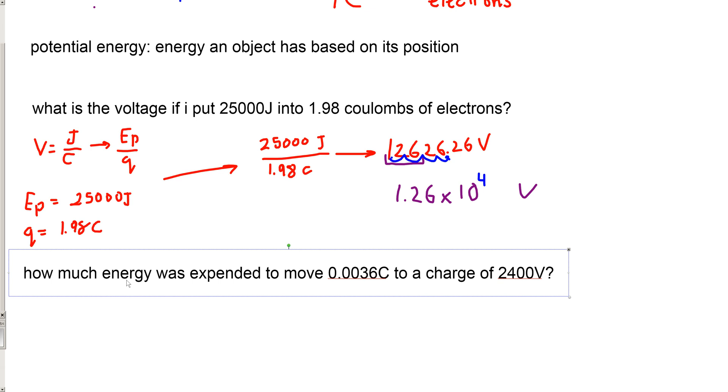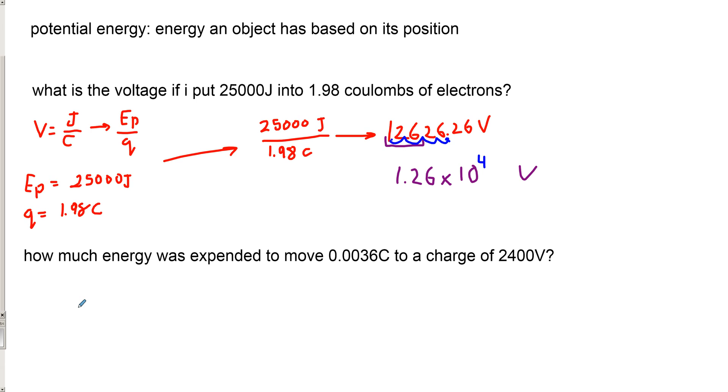So what happens if we've got a slightly different question like this. How much energy was expended in order to move 0.0036 coulombs to a charge of 2400 volts? So this time we're going to write down our formula. So V equals Ep divided by q. And we're trying to find energy. That means we want to get Ep all alone. So we look here and we do our little diagnosis. We figure out what we need to do with this question. I need to multiply both sides of this equation, pardon me, by q.